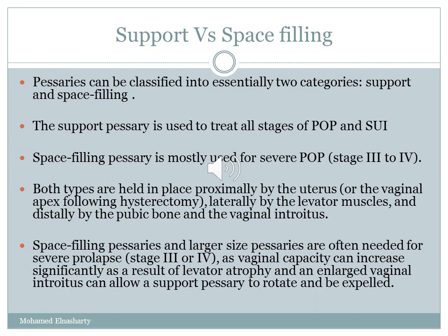Pessaries are classified into two main categories: support or space-filling. Support pessaries are used to treat all stages of pelvic organ prolapse and stress urinary incontinence. Space-filling pessaries are mostly used for severe pelvic organ prolapse, stage 3 or 4. Both types are held in place proximally by the uterus or vaginal apex following hysterectomy, laterally by the levator muscles, and distally by the pubic bone and adrenal introitus. If the vaginal muscles are very weak, the space-filling pessary is most appropriate as it creates negative pressure and acts by suction, keeping it in place.